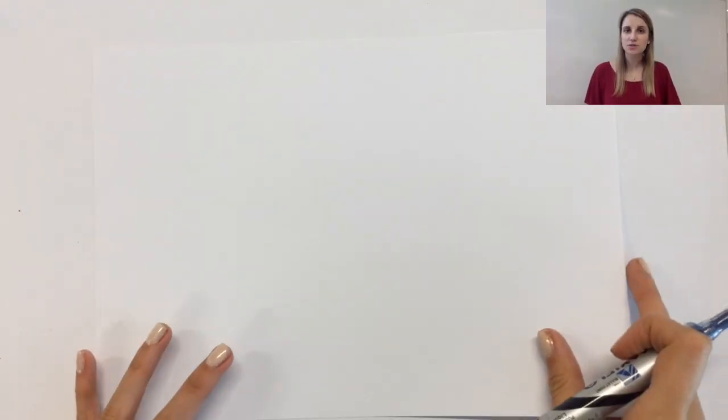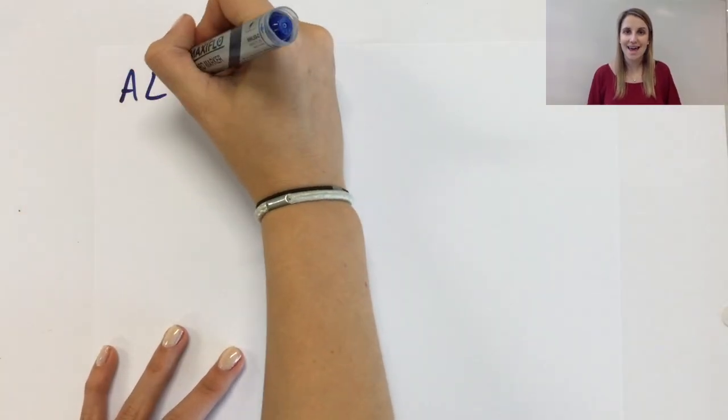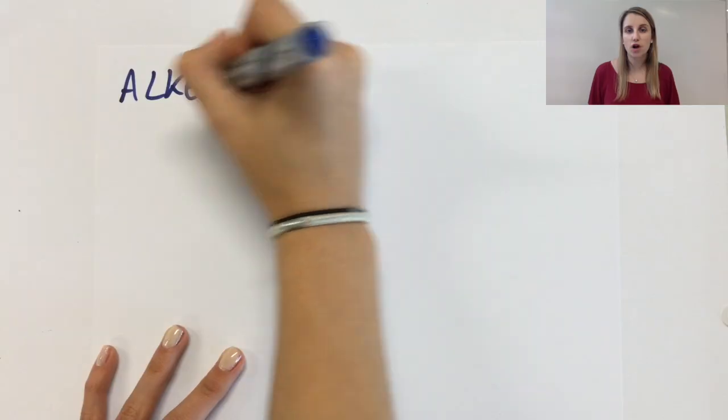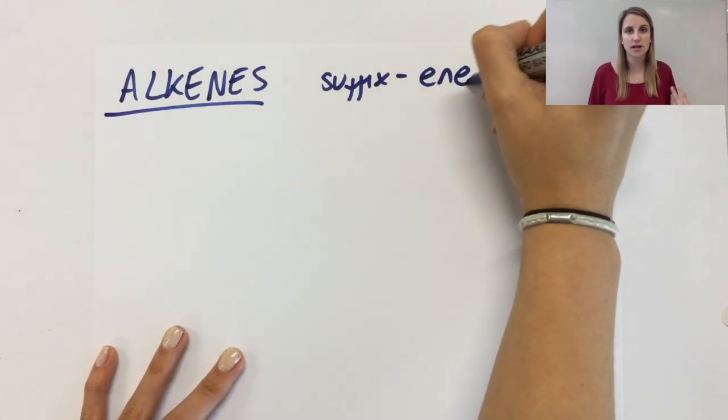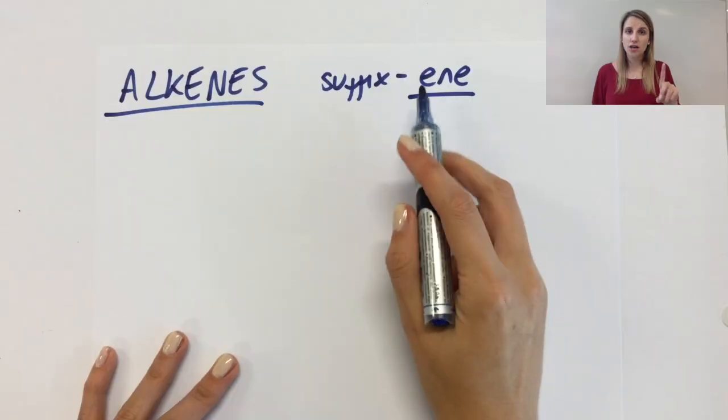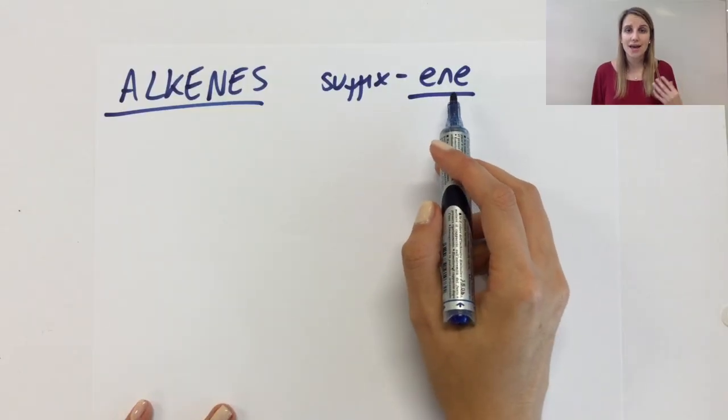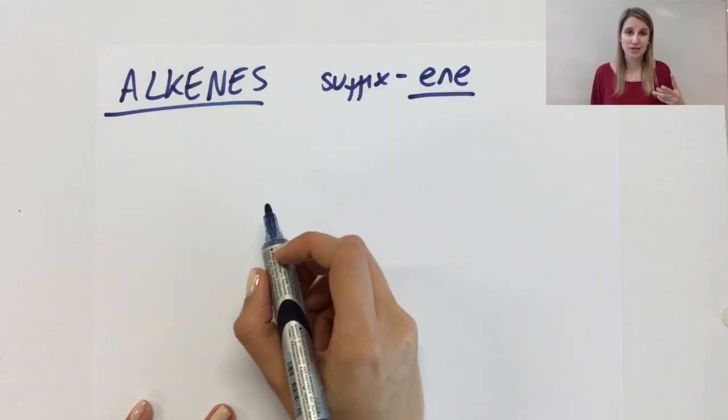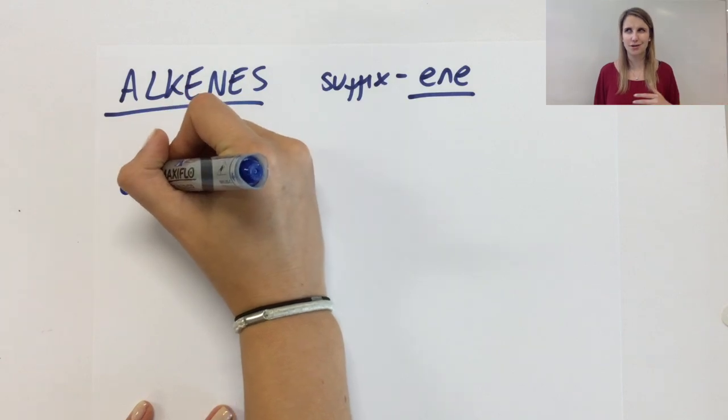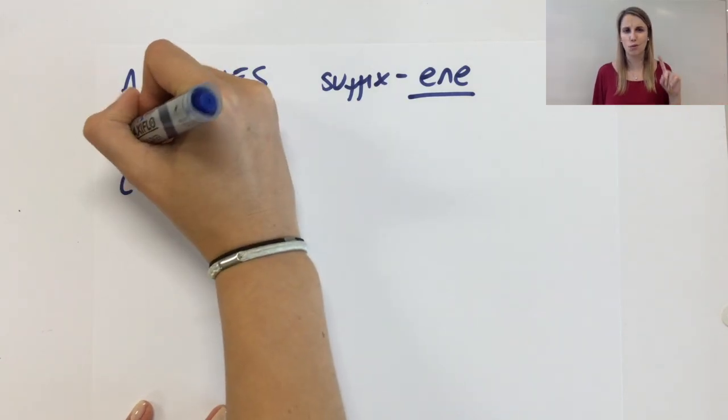All alkenes will end with the suffix E-N-E, which tells us that we've got a double bond between two carbon atoms. For that reason, the first molecule that I can draw is the one with two carbons because you can't have a double bond between two carbons if you've only got one carbon.